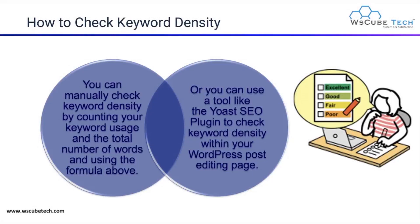To check your keyword density, you can manually count the words you are using in your content and divide by the total number of words using the given formula. However, this manual approach is practical only when your word count is limited. If you have an article of 5000 words or more, it becomes difficult to manually track the keyword count.